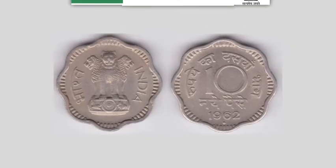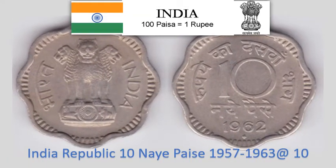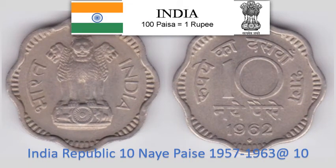India Republic 10 Nae Paise 1957–1963. 4.9 gram Cupronickel scalloped coin with 8 notches, 23 mm diameter. Krause Reference No. 24. Approximate market value Rs. 10.